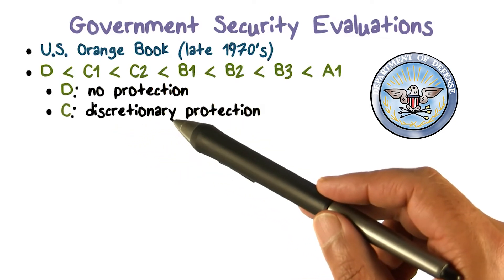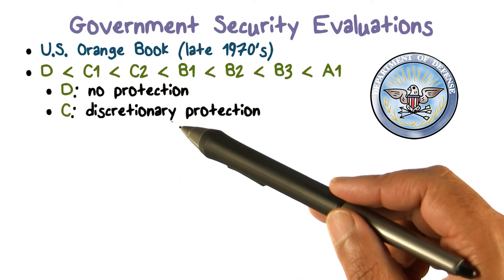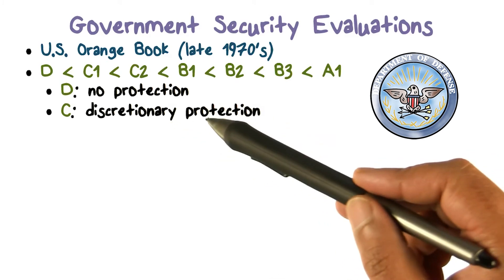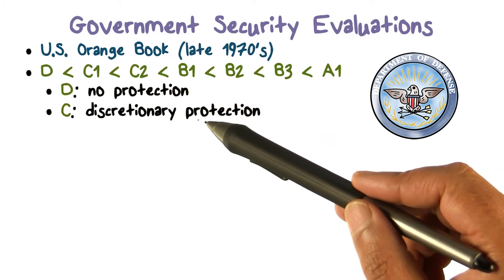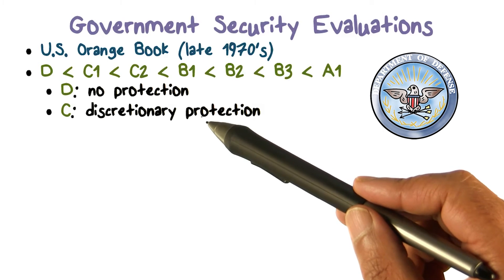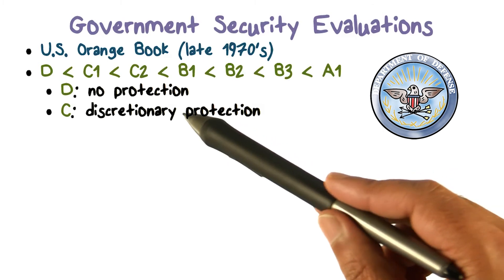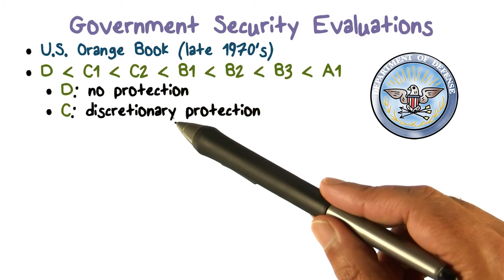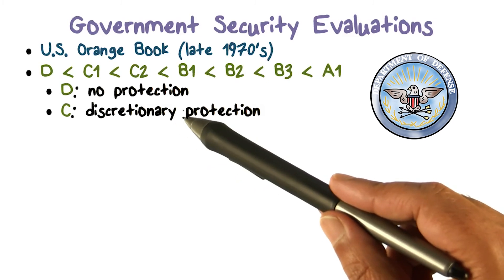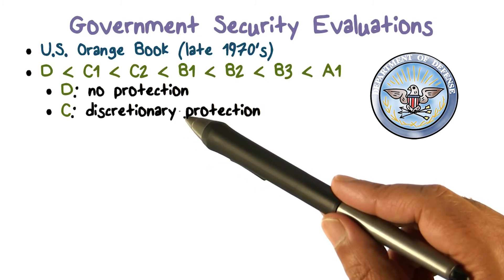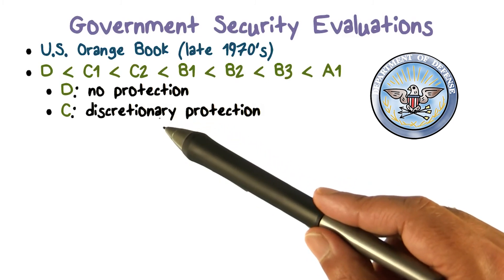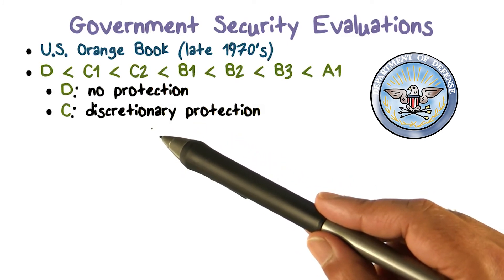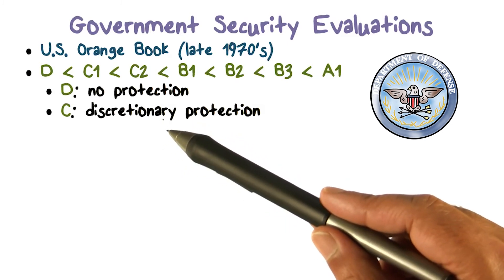Division C requires authentication and access control. For access control, it only has to do discretionary access control. But of course, to do access control, it also has to do authentication. If it does that, it addresses a bunch of other things. TCB isolation and things like that have to be here too, which places you in Division C.